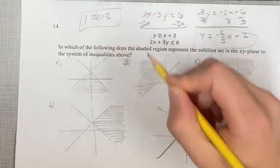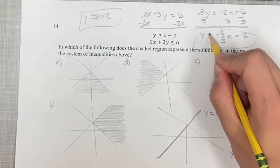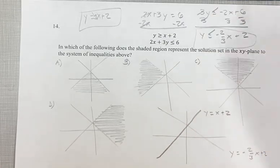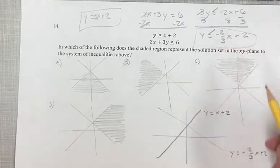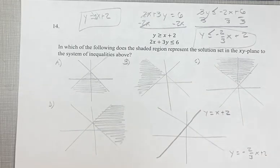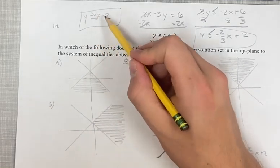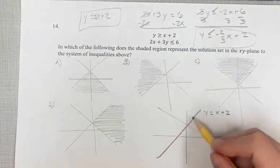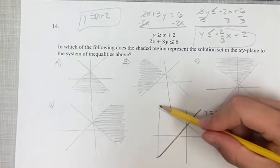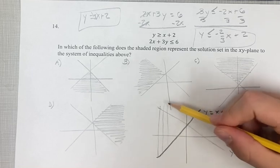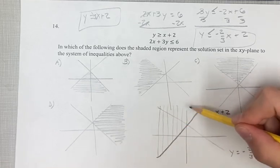We have y is greater than x plus 2 and y is less than or equal to negative 2 thirds x plus 2. For this one, we're looking for y values that are greater than the line. So we're looking for y values greater than it. That's going to be all of these numbers above the line.